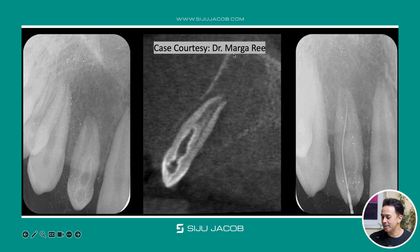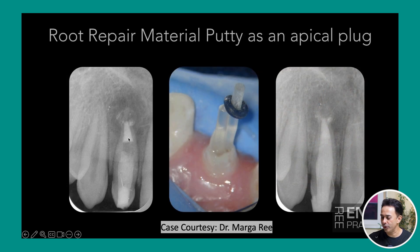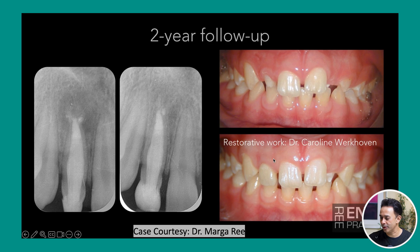This is one of Dr. Marga's cases. She uses a K-Sclidin drill or a Munzbur to completely hollow out and remove the dens apparatus as one whole part. She then places calcium hydroxide, recalls the patient, and puts MTA at the apex — because most of the time the apex is blown out once you remove the entire dens. She then strengthens the coronal part with a fiberglass post. At a two-year recall the result looks very good, with the restorative work done by Dr. Marga's colleague Dr. Caroline. The disadvantage of this approach is that the tooth becomes weaker coronally, but this is what Dr. Marga suggests.